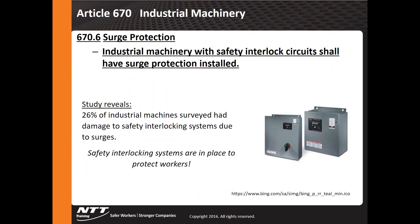Article 670.6 covers surge protection for industrial machinery. If industrial machinery has safety interlocks, it shall have surge protection. Research found that surges had damaged safety interlock systems, raising questions about whether they were still functioning correctly. The code now requires surge protection to help protect workers from failures in machinery safety interlock systems.